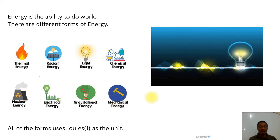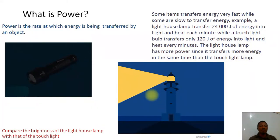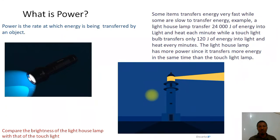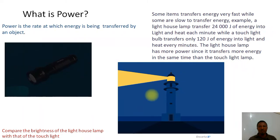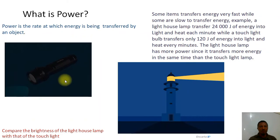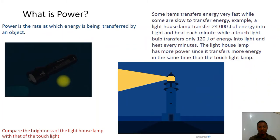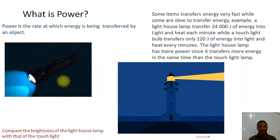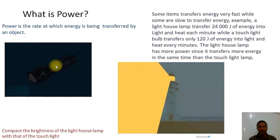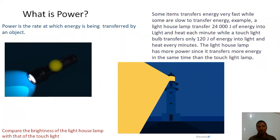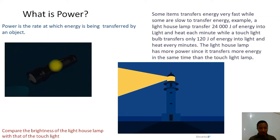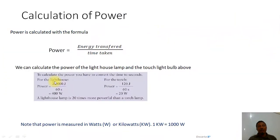All of these forms of energy use the Joule as the unit. Now, what is power? Power is the rate at which energy is being transferred by an object. Some objects transfer energy very fast while some do so very slowly. For instance, looking at the picture here, we have a lighthouse and a torchlight. The light bulb in a lighthouse transfers as much as 24,000 J of energy into light and heat every minute, while this bulb transfers just 120 J of energy into light and heat every minute. So the lighthouse lamp has more power since it transforms more energy in the same time.